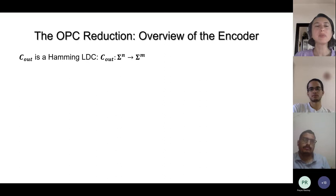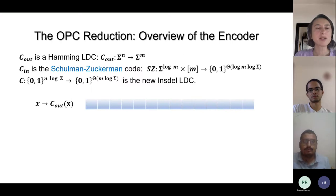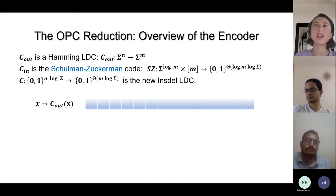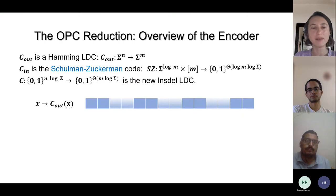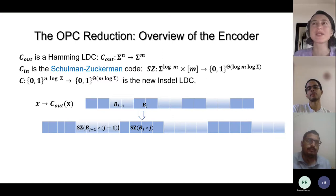Let me give an overview of the reduction. There is a concatenation happening here. We start with a Hamming locally decodable code, encoding X so we can recover every message bit by making few queries to the codeword. We then create blocks of size about log M. To each block we append its position index, because when insertion-deletion errors happen there is huge misalignment and we don't know where things come from. Adding the position tells the decoder which block should have been at position j.